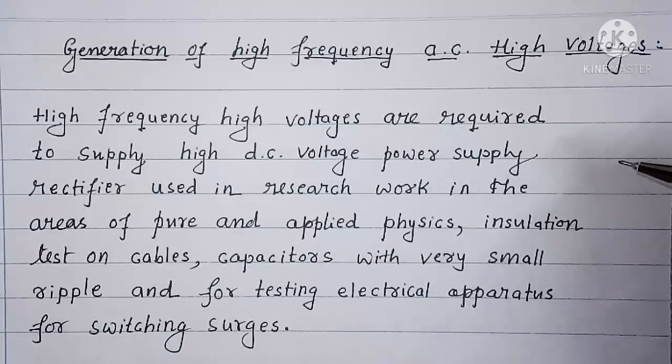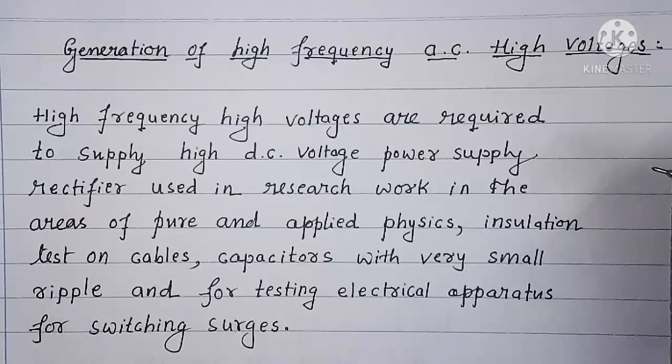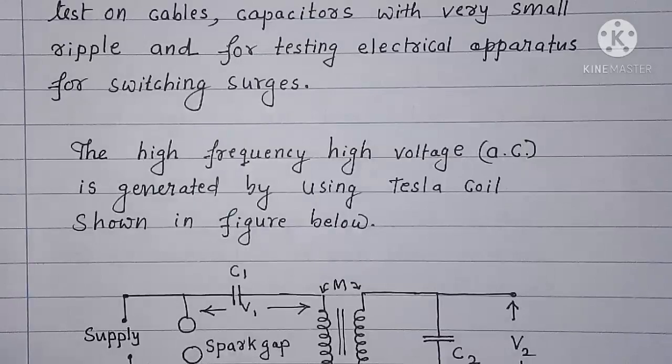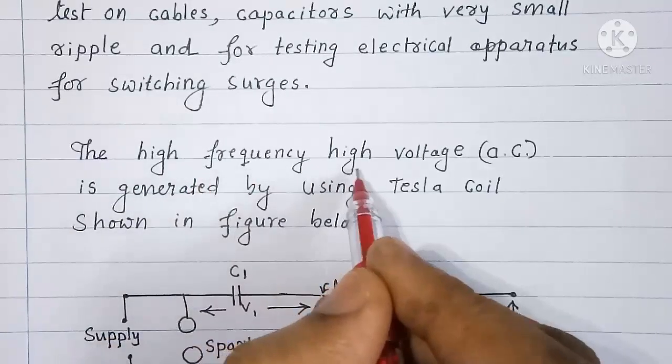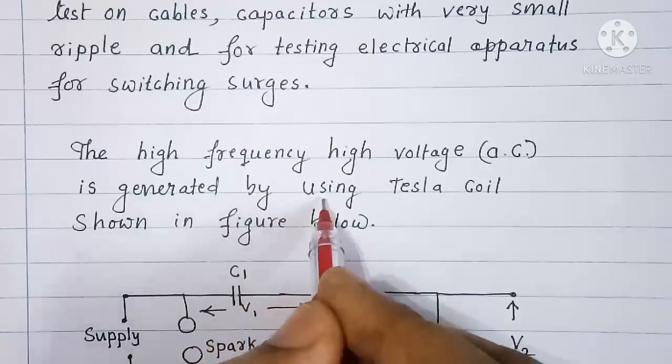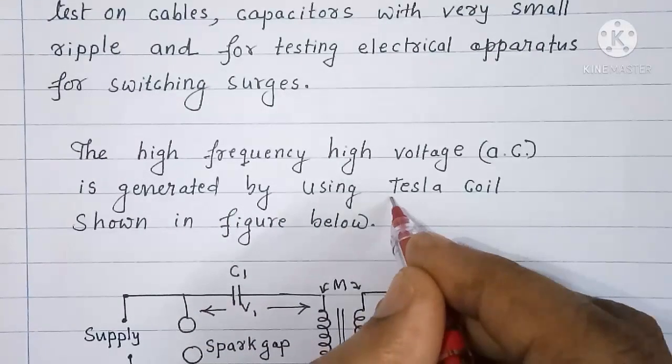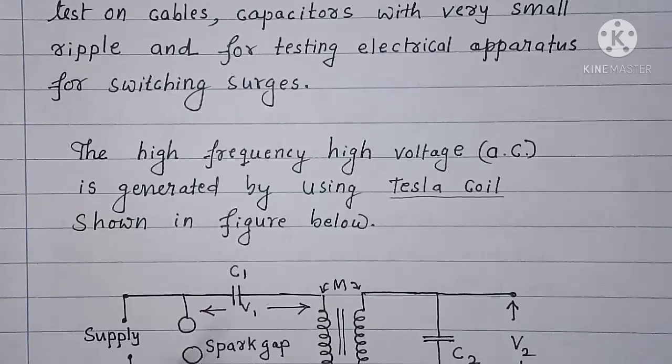To generate DC high voltages with less ripples, power supplies in which rectifiers which are being supplied with high frequency AC high voltages are used. The high frequency high voltage AC is generated by using a circuit called Tesla coil. Such a Tesla coil is shown in figure here now.